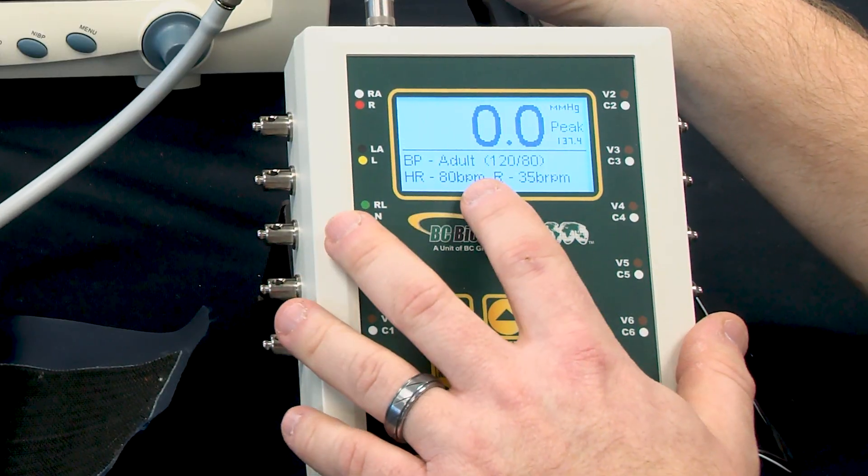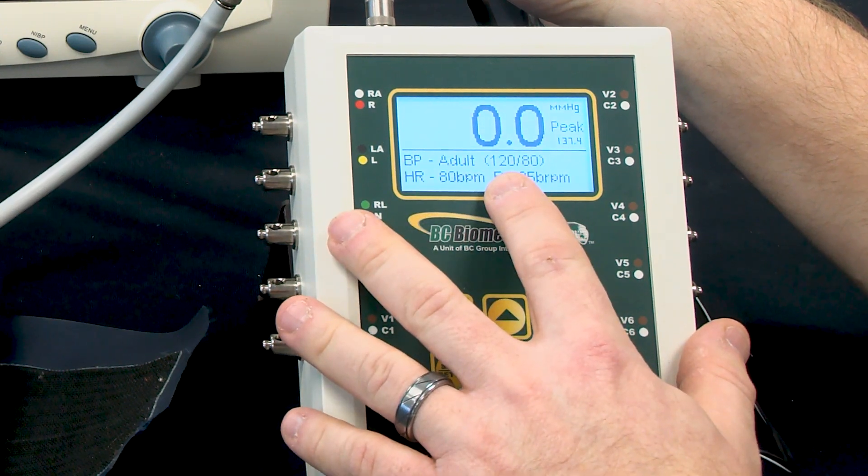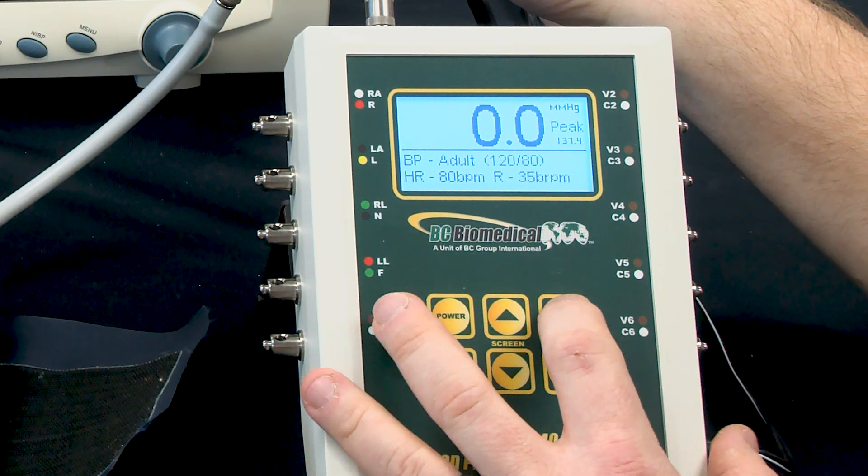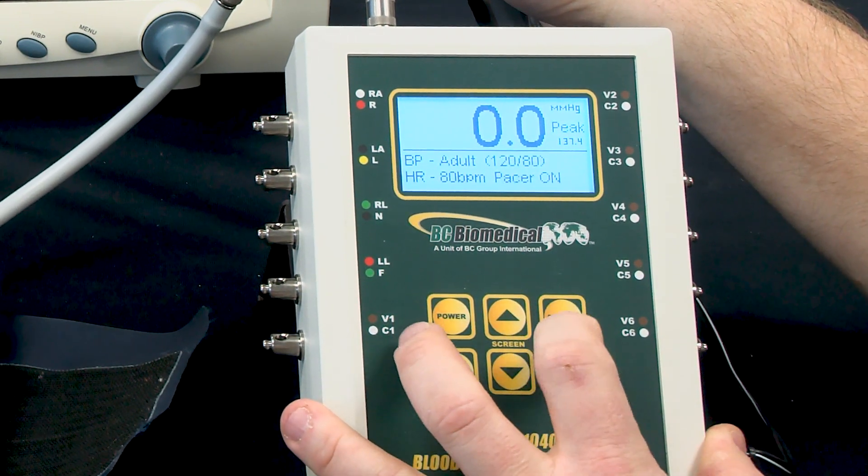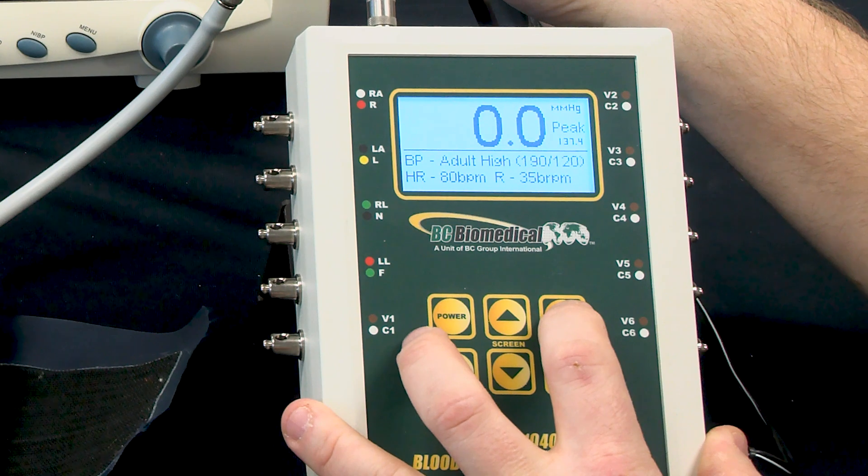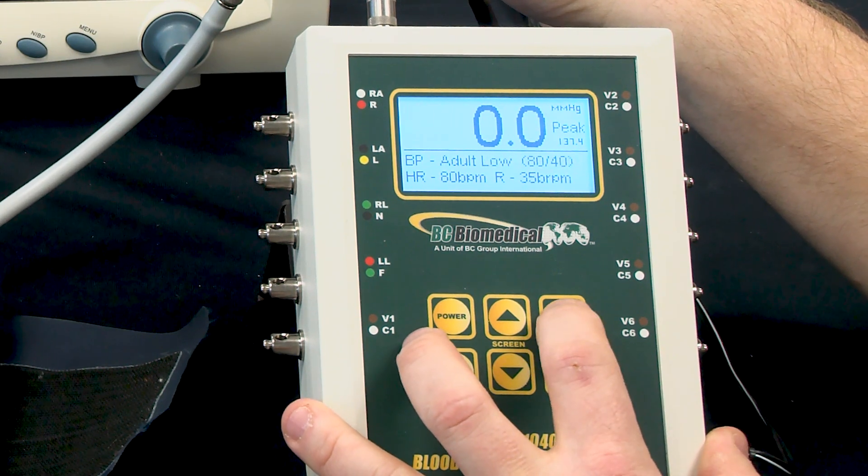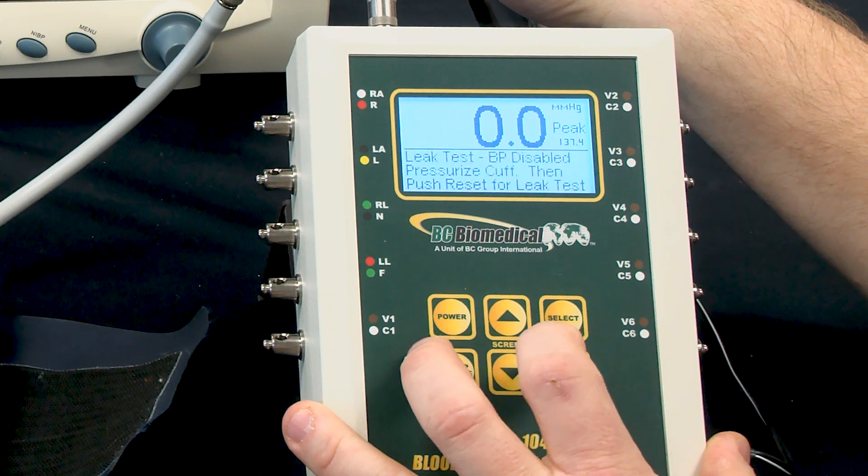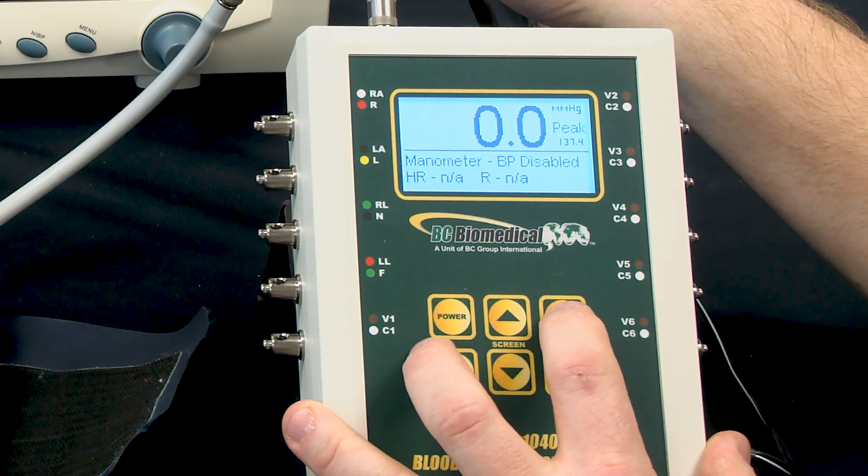By default, the NABP will start up with a simulation of 120 over 80 pressure. We can easily change that by selecting the press select button, and we'll cycle through all of the available pressures and simulation modes that are available on our NABP simulator.